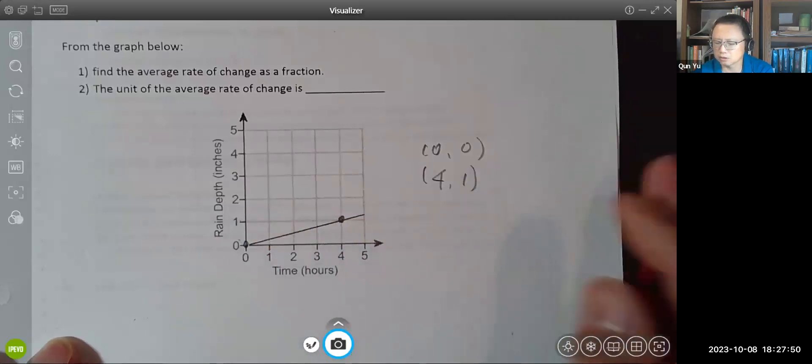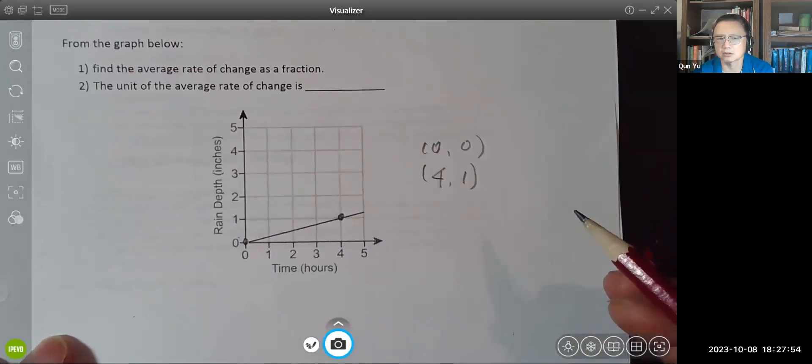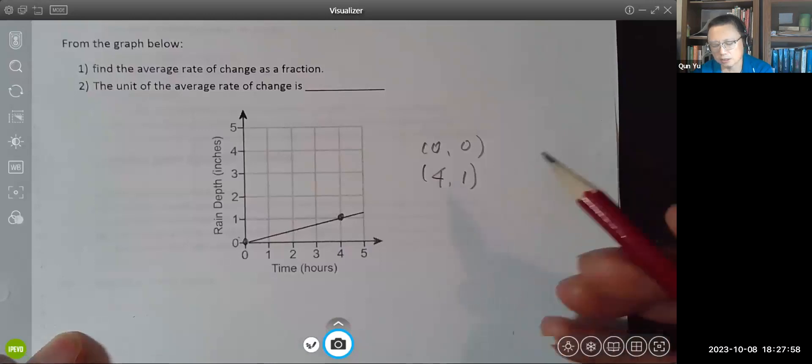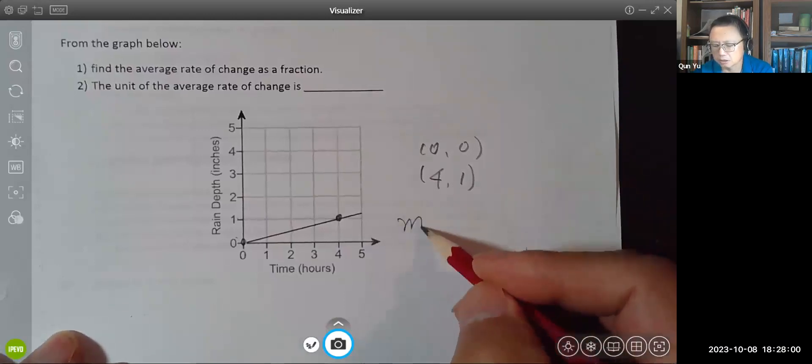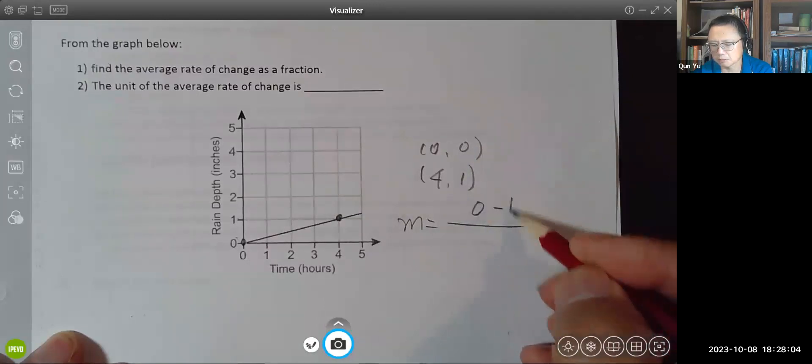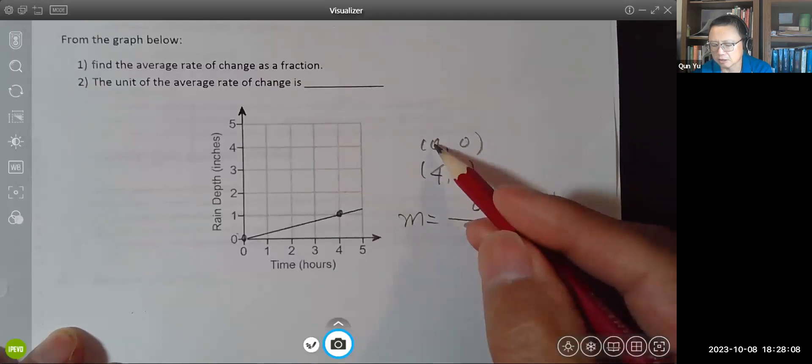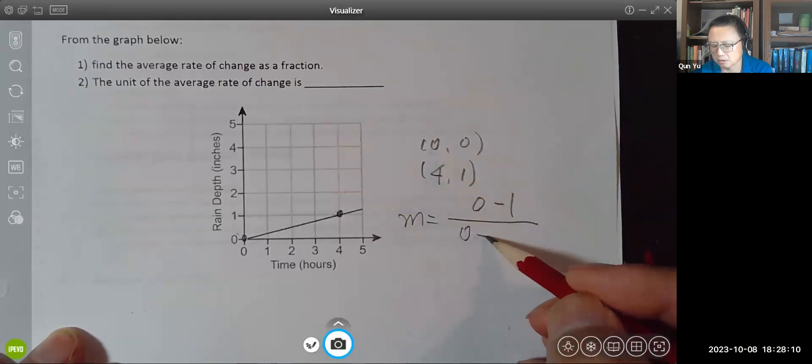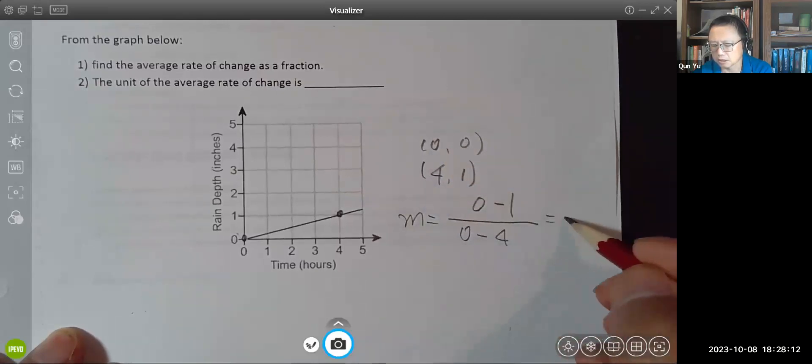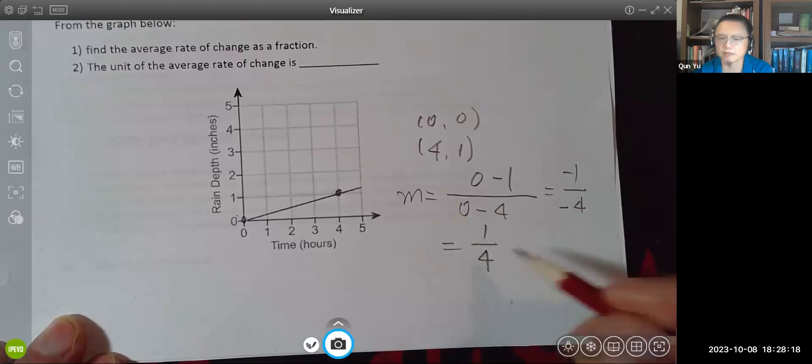Now having these two points, we have enough information to calculate the slope, also called average rate of change, also growth rate in our linear model. So y minus y is top number minus bottom number. It doesn't matter the order, you just need to be consistent again. This one from top to the bottom, zero minus four. So I get negative one over negative four. Negative divided by negative is positive, so final answer is one quarter.